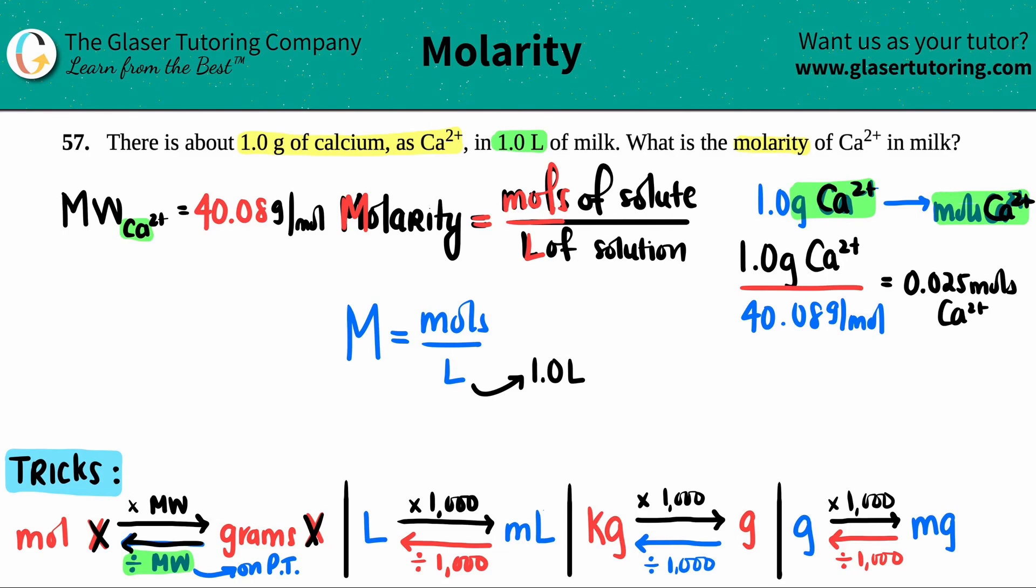Look at the units. I had a gram and then I had a gram again. Since those are the same units, they cancel, and I have only mole left. That's why there's only a mole unit at the end.